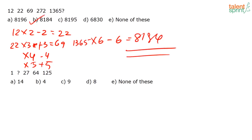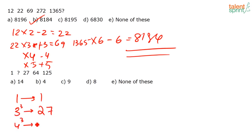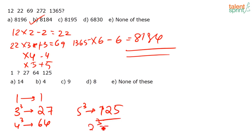Next series: 1, _, 27, 64, 125. Immediately you can see 27 = 3³, 64 = 4³, 125 = 5³. So 1 = 1³, the missing number is 2³ = 8.